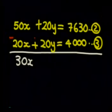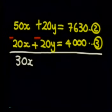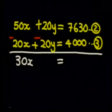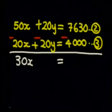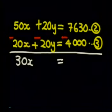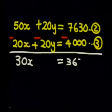20Y minus 20Y gives me 0. Is equal to 7,630 minus 4,000, which gives me 3,630.